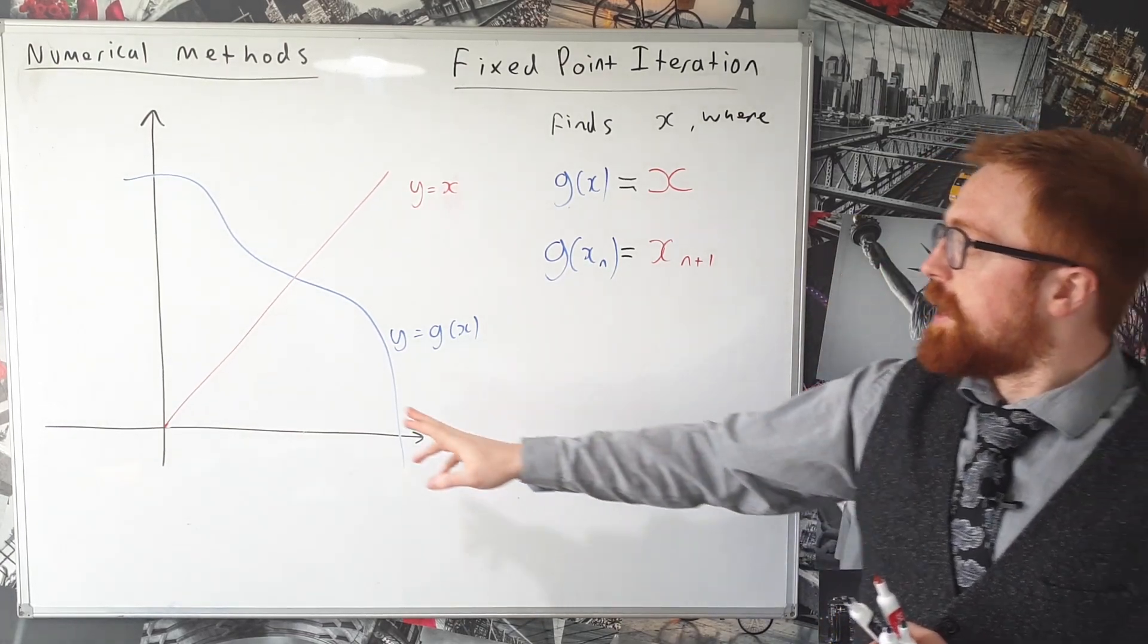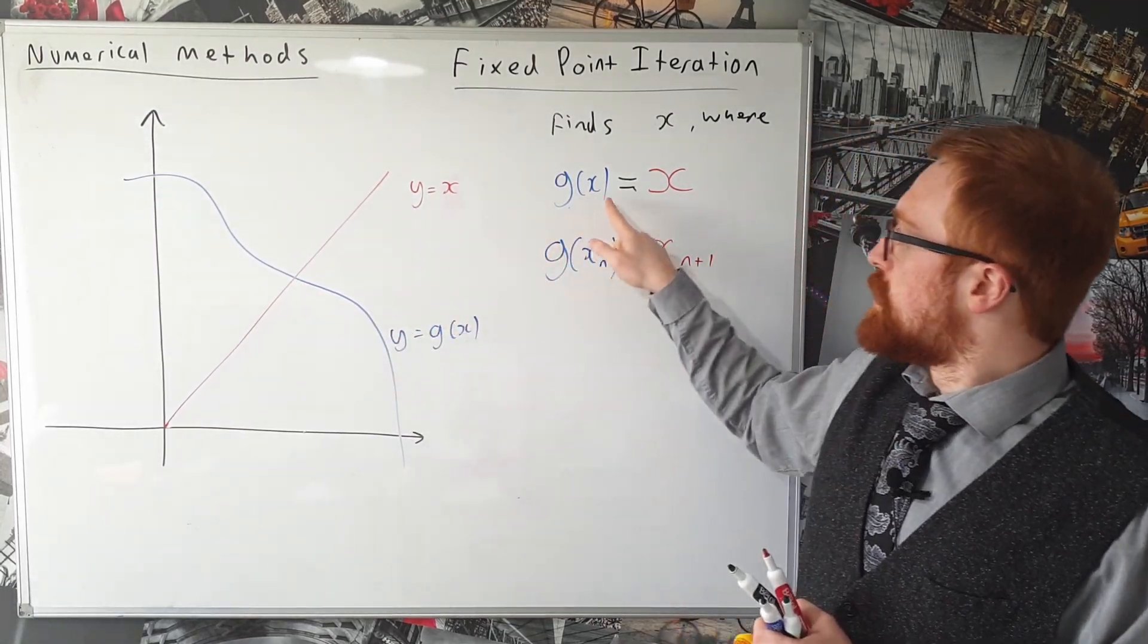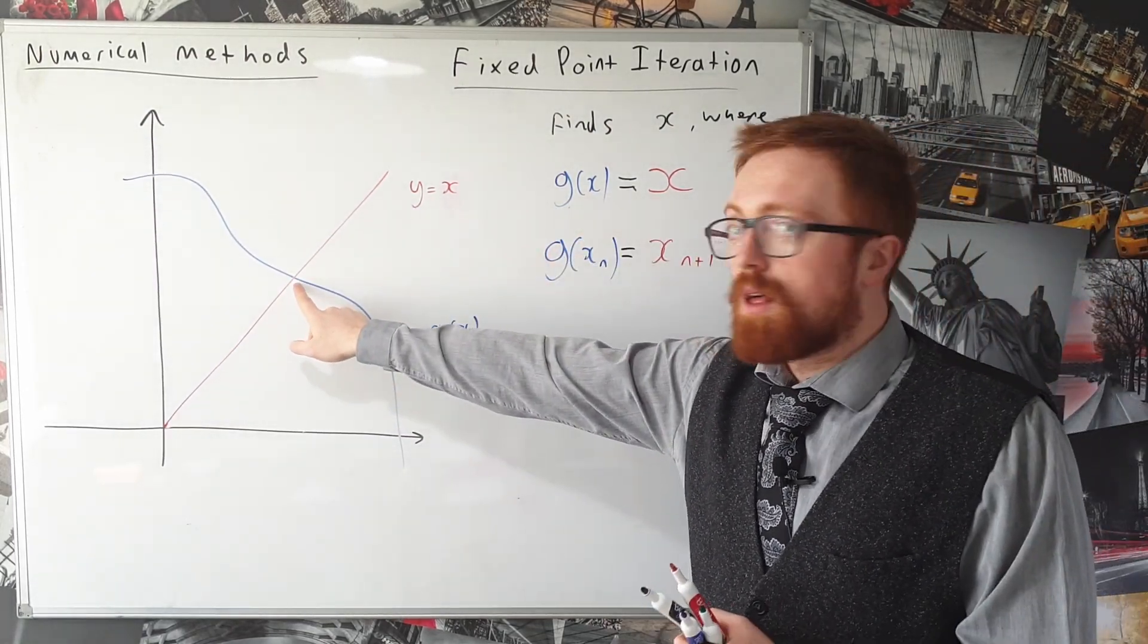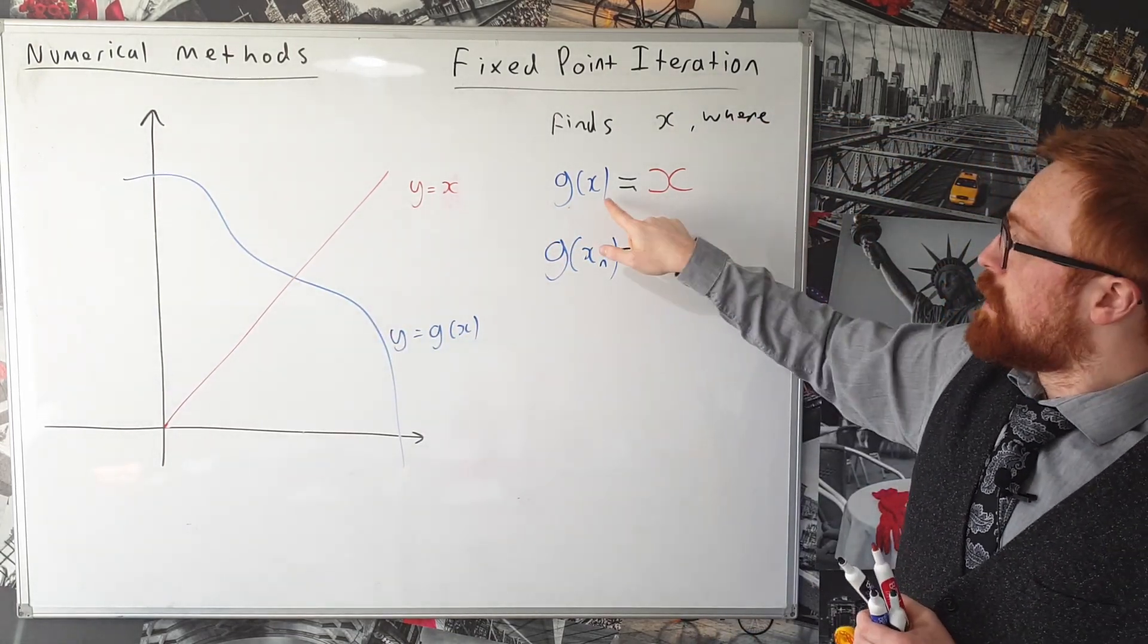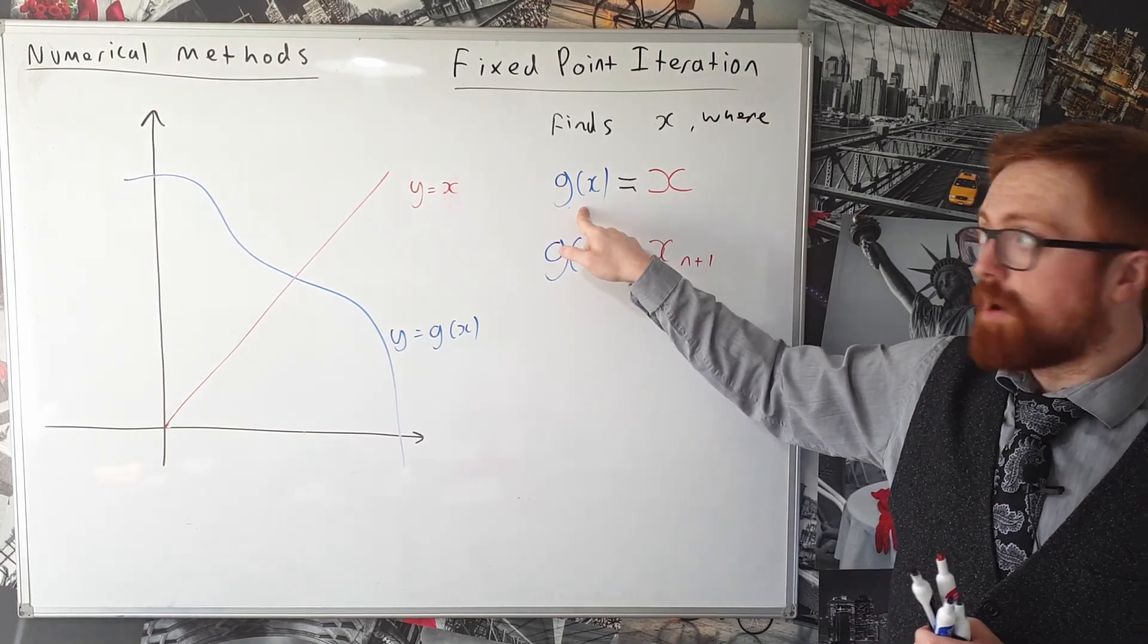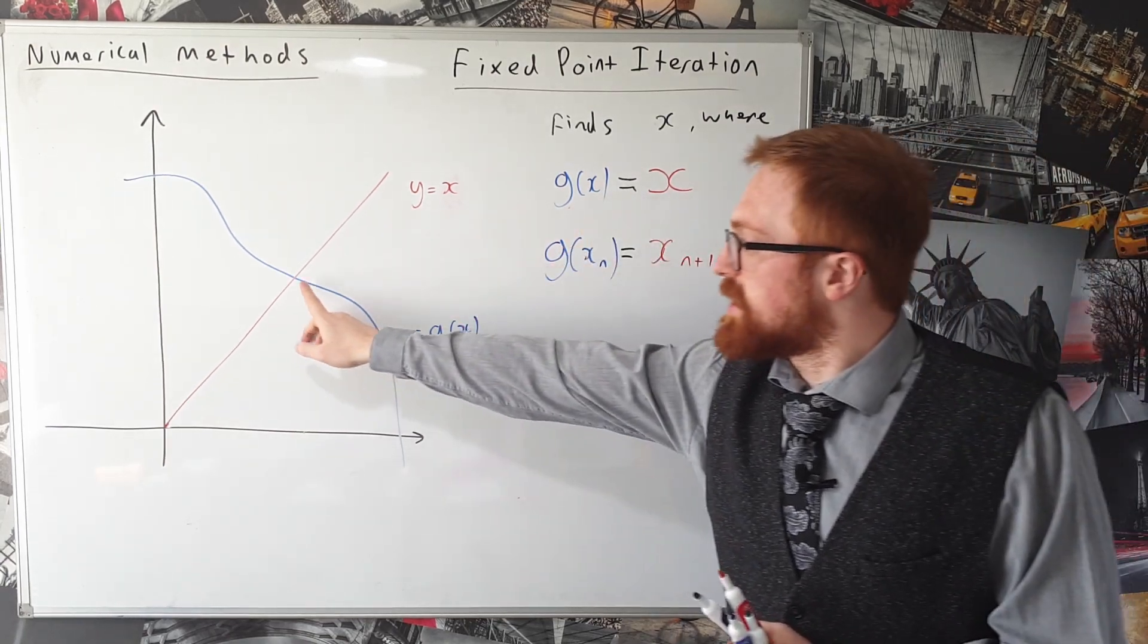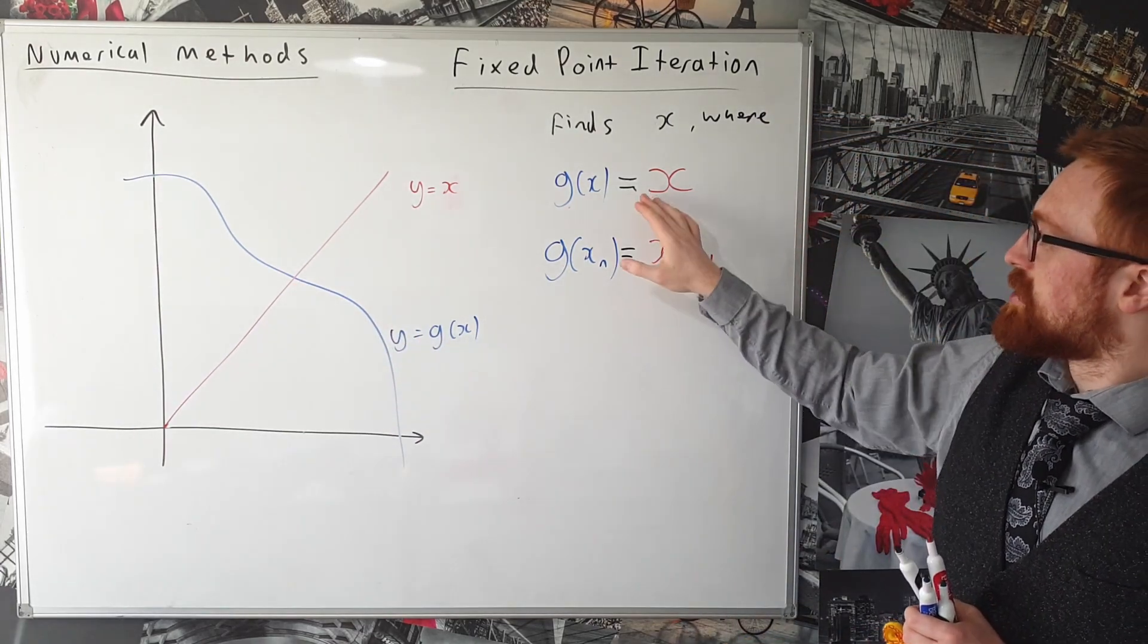And now the reason that this works is because if we are at this point and we put our value of x into our function, well we know that's the point where g of x is equal to x, so we know that the number we get out of our function is going to be the same as the number we put into our function. So if we're at this point we're not going to move. So that's a little bit why it actually works.